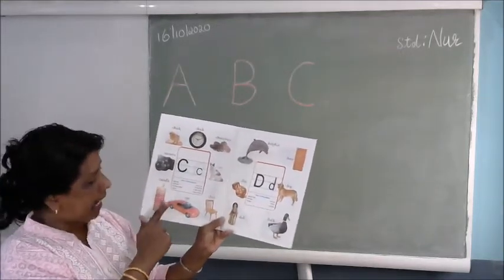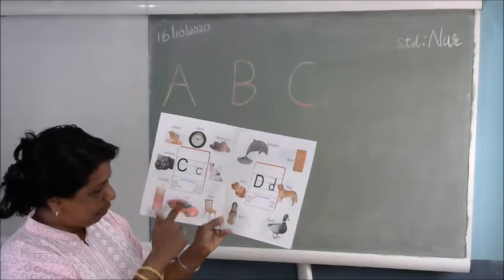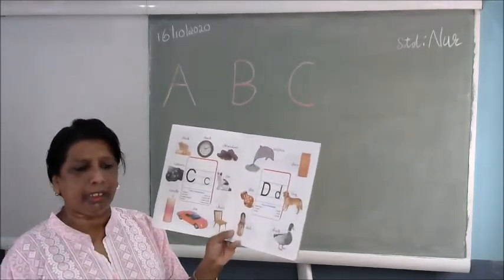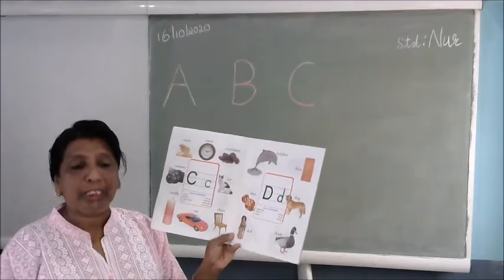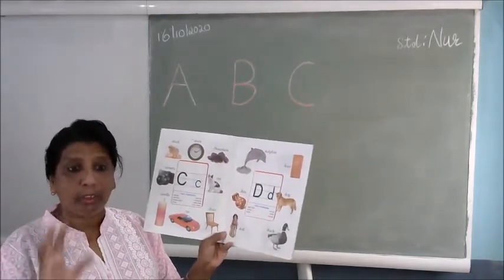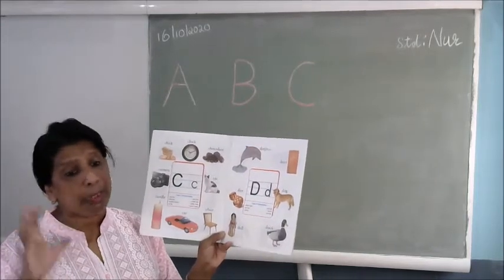Then C for candle. C for car and C for chair. There are so many C. C for cup. C for cake. So many things are there in C. Now these three letters you must be perfect.